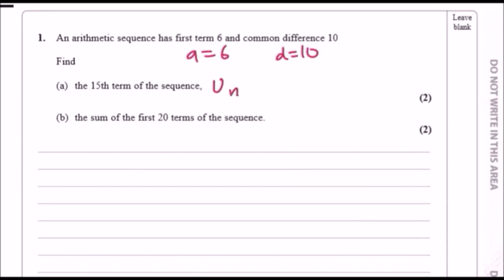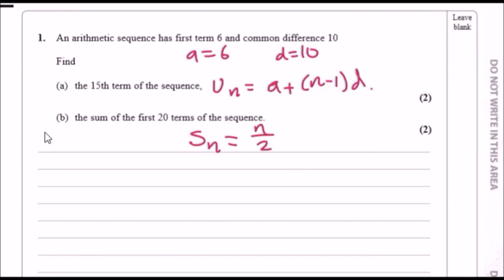The general equation for defining any term is the standard a plus (n minus 1)d, where a is the first term, d is the difference, and n is the position. The sum formula is S_n equals n over 2 times (2a plus (n minus 1)d).